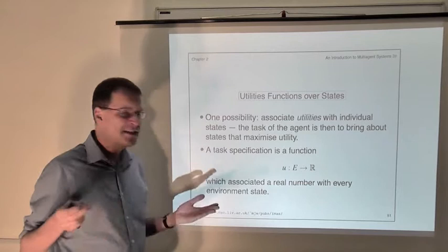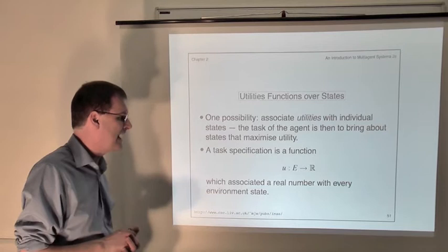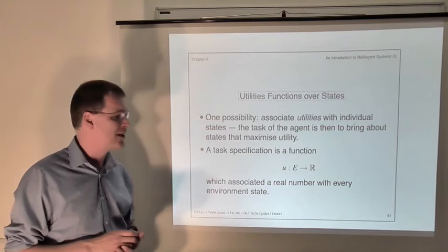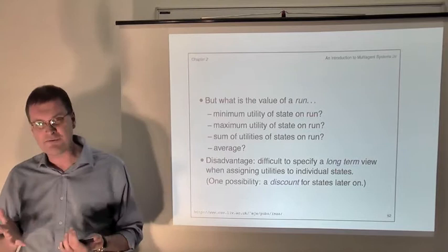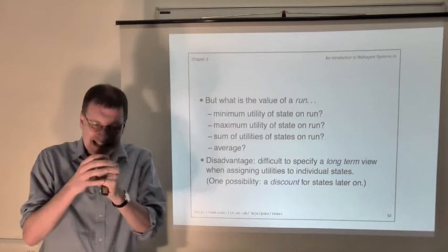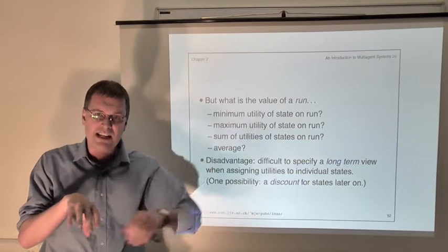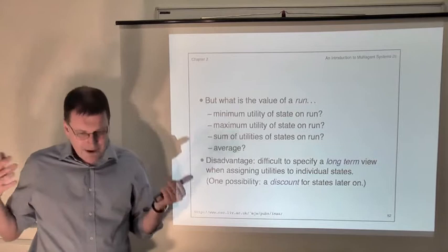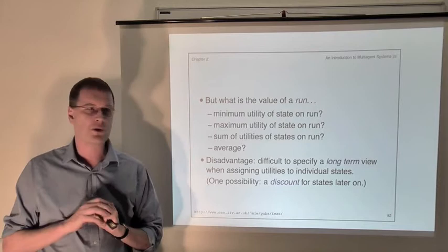So intuitively, given such a utility function, the task of the agent is to bring about environment states that have the highest value. This is a very simple and very high-level way of describing a task for an agent, and crucially it doesn't tell the agent how it is to bring about those environment states. One difficult issue with these simple utility functions is that what we're assigning values to is environment states — that is, snapshots of the environment. So inherently we're taking a very short-term view by assigning values to individual environment states.